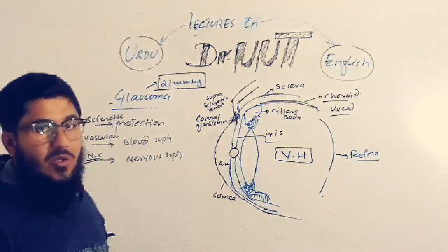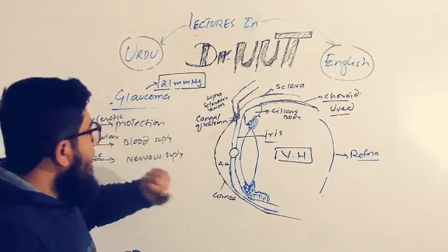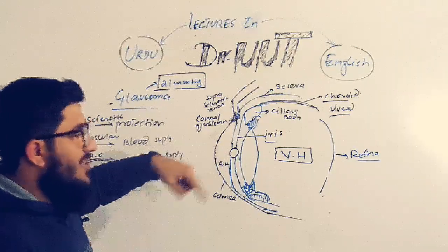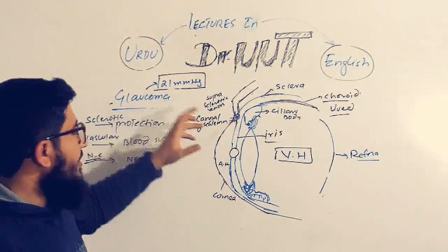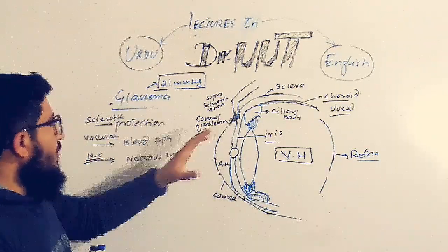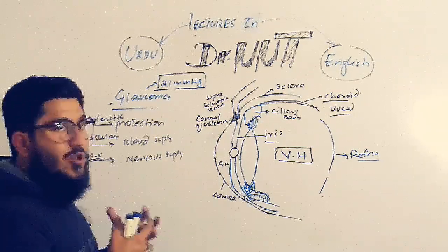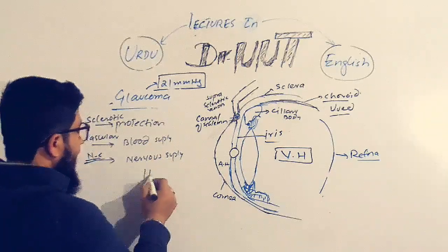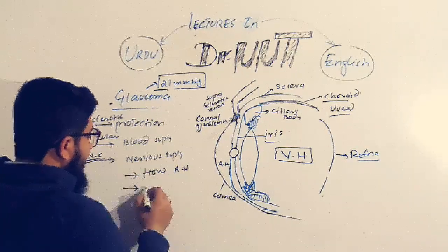When the retina is damaged, visual sensations are lost and the result is blindness. The aqueous humor accumulates and generates pressure. If this pressure exceeds 21 mmHg, it damages the retina. The key questions are: how is the aqueous humor formed, and why does its pressure increase?